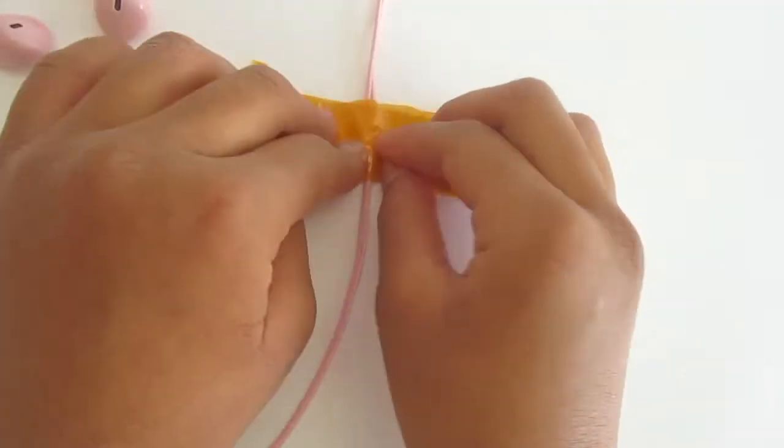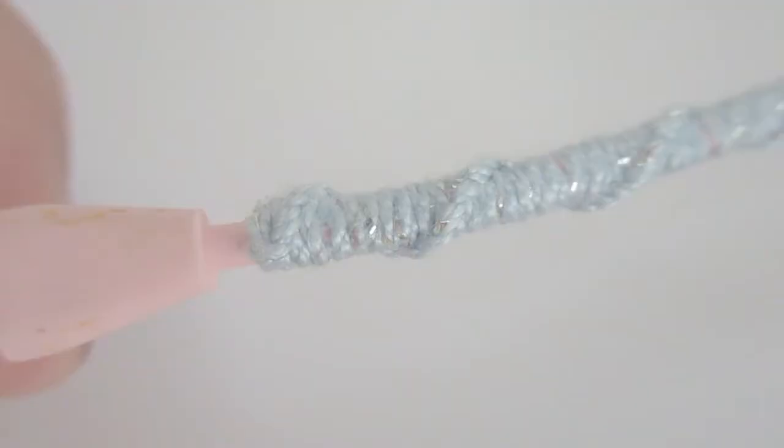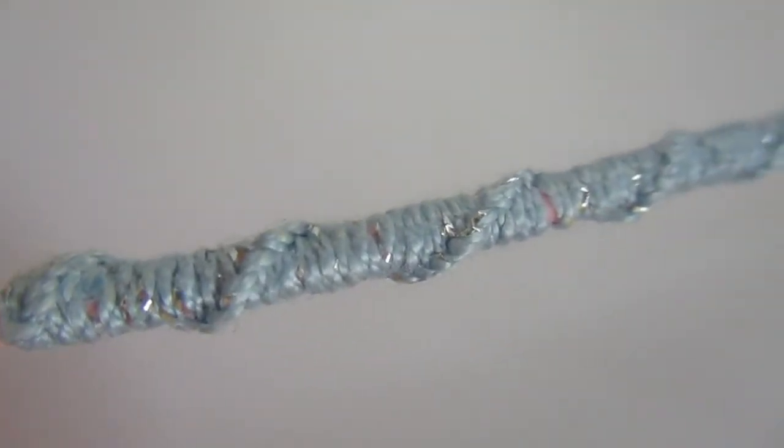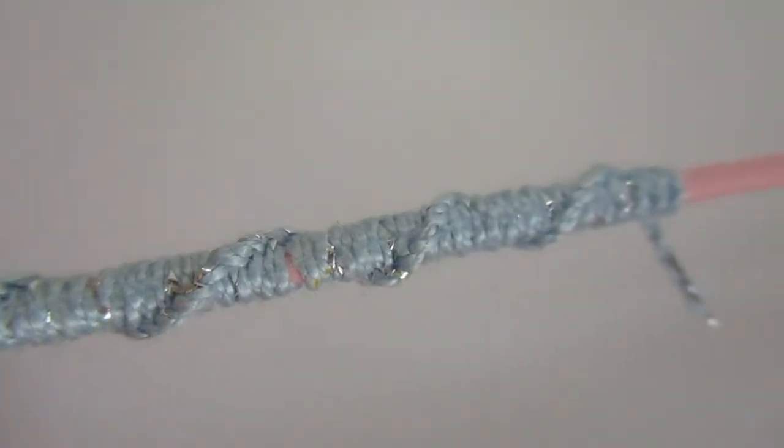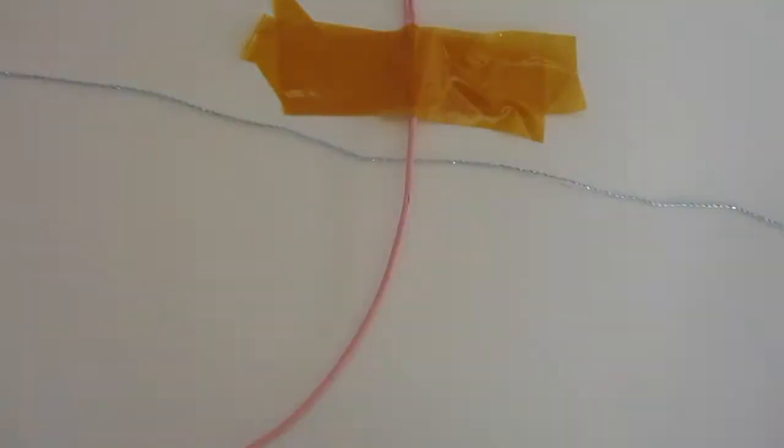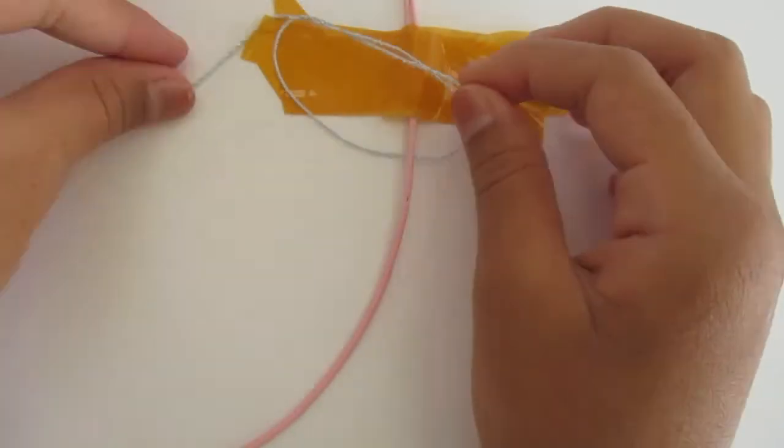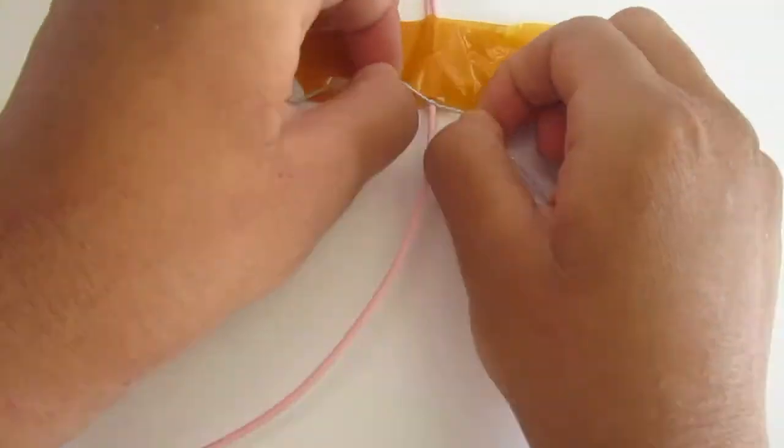First, I'm going to show you how to do the easiest of all the knots, the spiral, which is just a line of knots wrapping around your cord. To start, I'm going to tie a simple knot, making sure one side is short and the other is long.